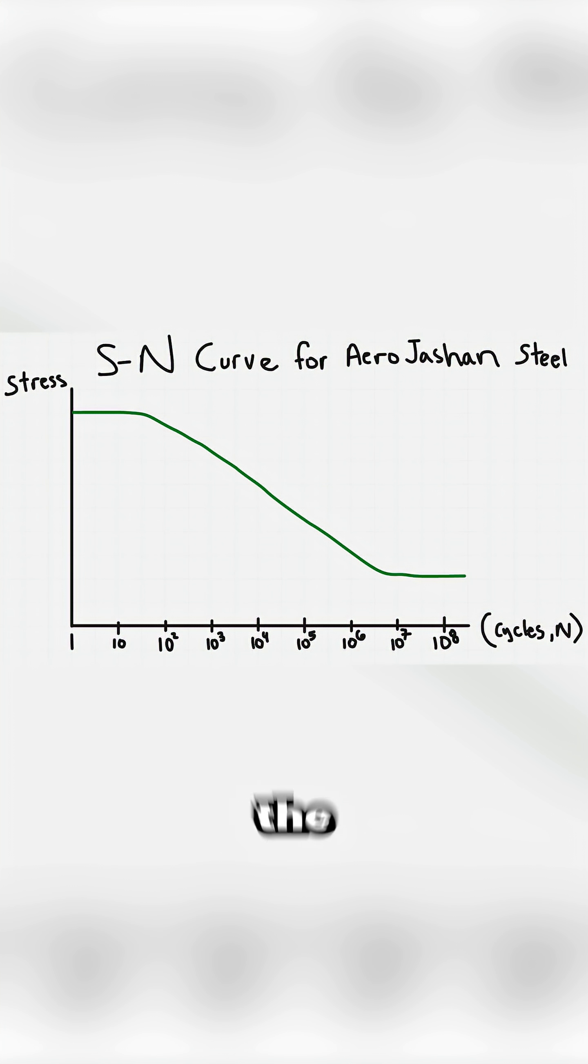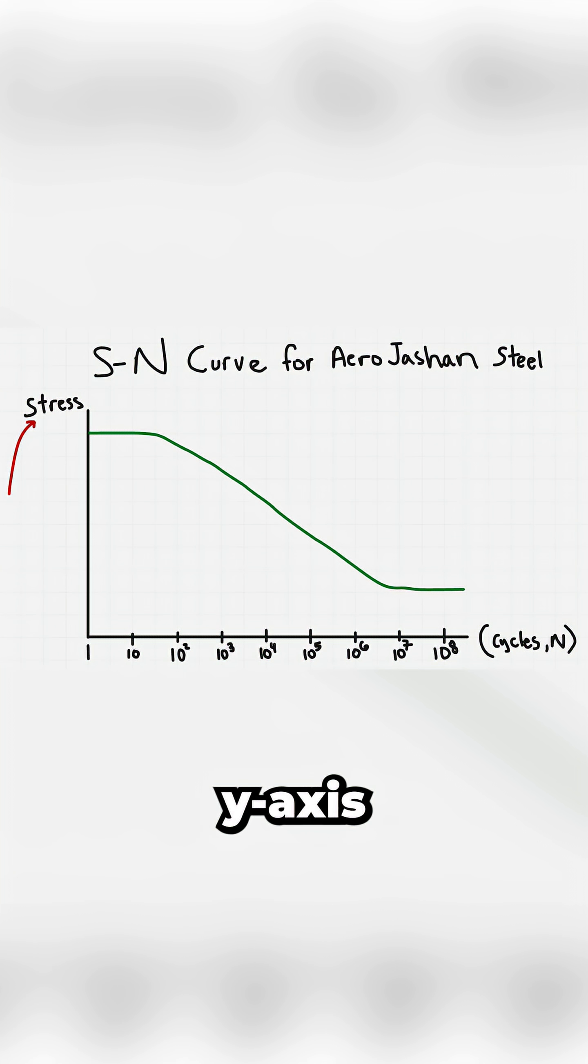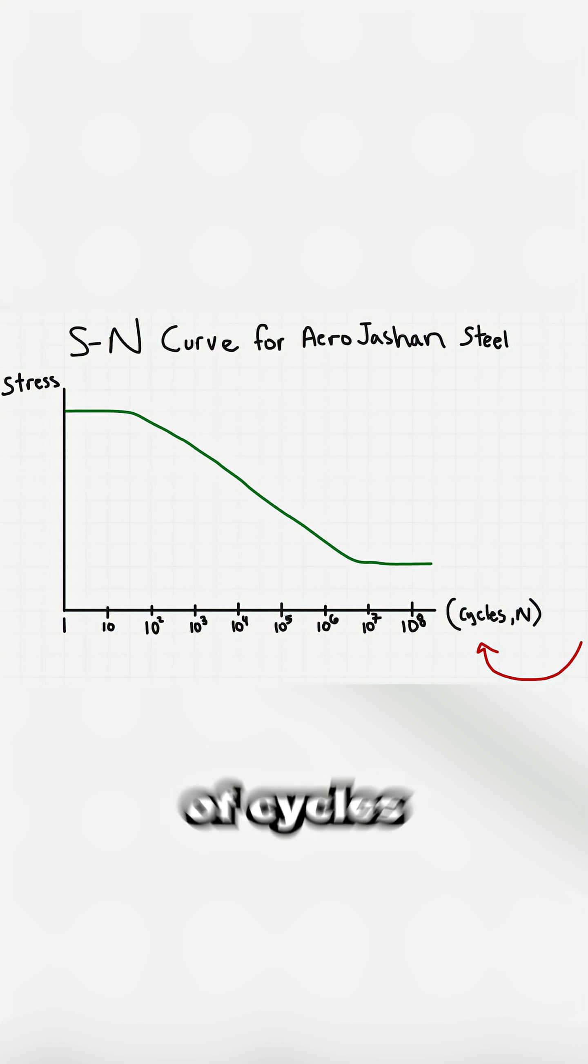I'm an aerospace engineer, and a starting point is called the S-N curve. On the Y-axis is the applied stress, and on the X-axis is the number of cycles.